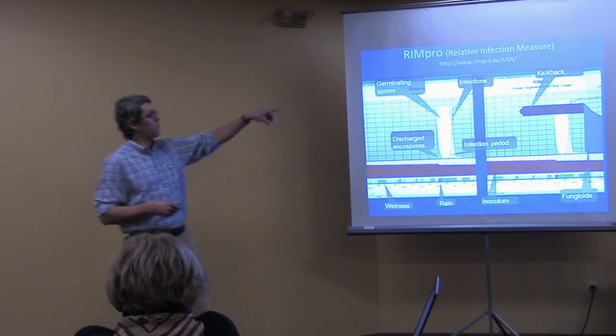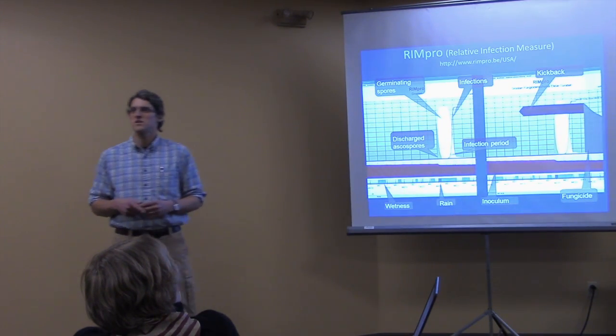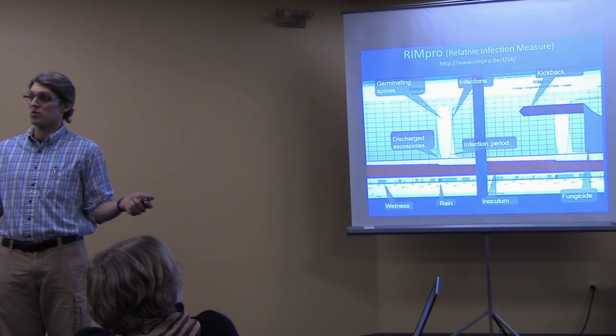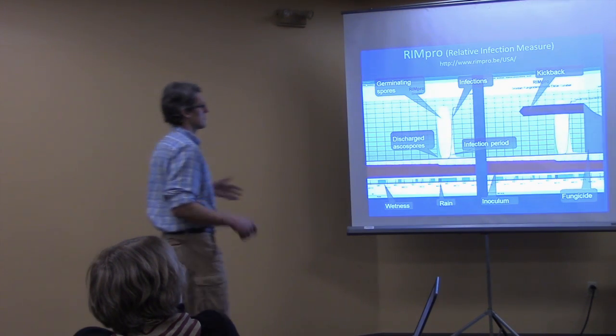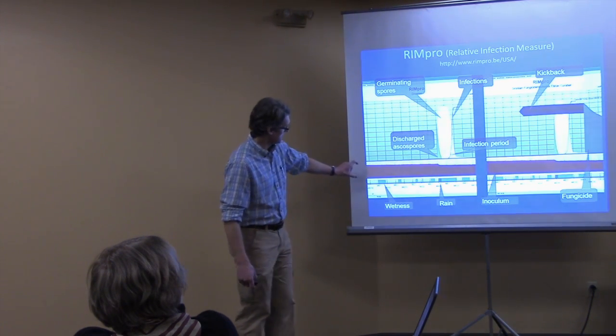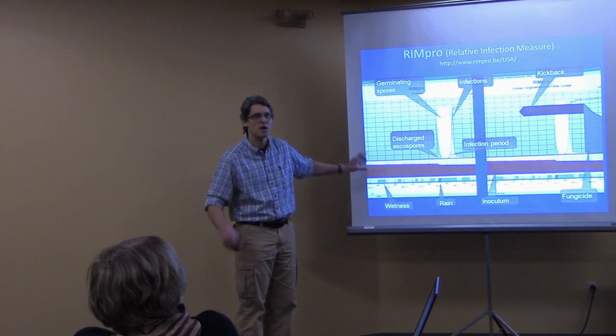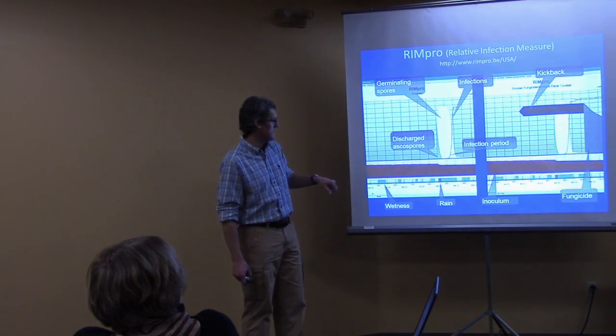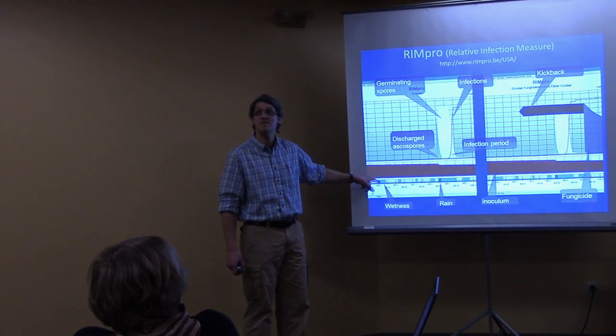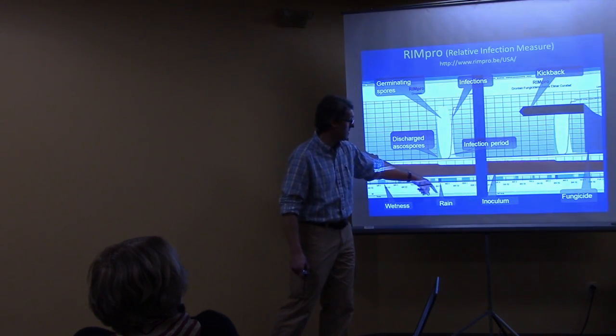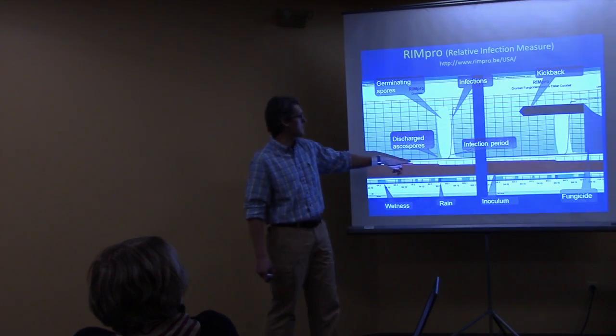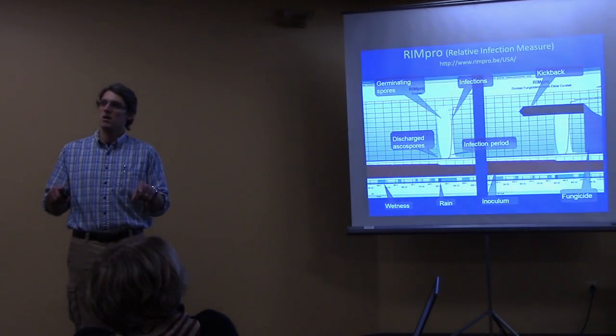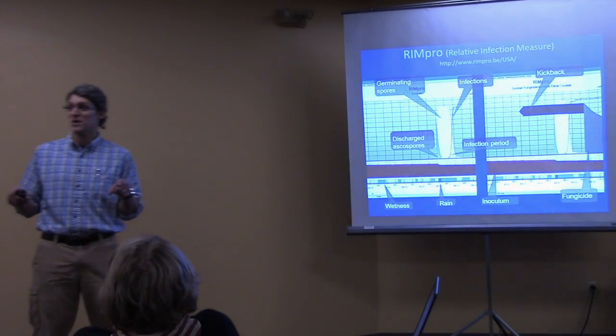There's a company over in the Netherlands that has developed this program called RIMPRO. It's an acronym for the relative infection measure. This is the website, rimpro.be/USA. We have a weather station at Kingman Farm and our weather data is available. This model is available to the public. You can just go and you can look at it. And what you can do is you can actually monitor the ascospore inoculum over the course of the season. At the beginning of the season, you're at 100%. You got 100% of your ascospores ready. And what you're waiting for is a rain event. When you get a rain event, the program predicts a discharge of ascospores.